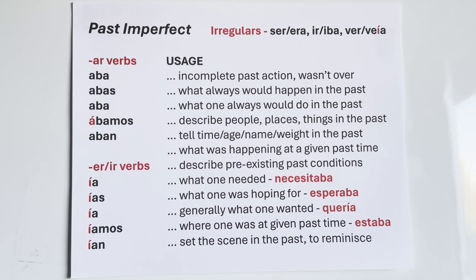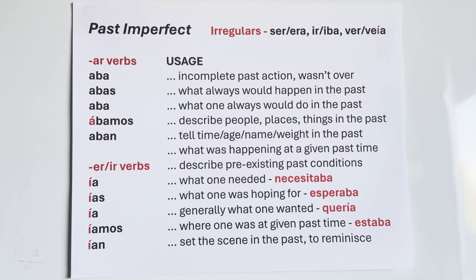Sixth usage: what was happening at a given point in time. When I went to work, it was raining — llovía or estaba lloviendo. It was cold out — hacía frío or estaba haciendo frío. There were a lot of people in the street — había muchas personas en la calle. It was cloudy — estaba nublado. It was dark out — estaba oscuro afuera. And describing pre-existing past conditions — like a realtor describing a house: la casa estaba un poco sucia, la casa era muy pequeña, la casa estaba en la esquina. All imperfect.